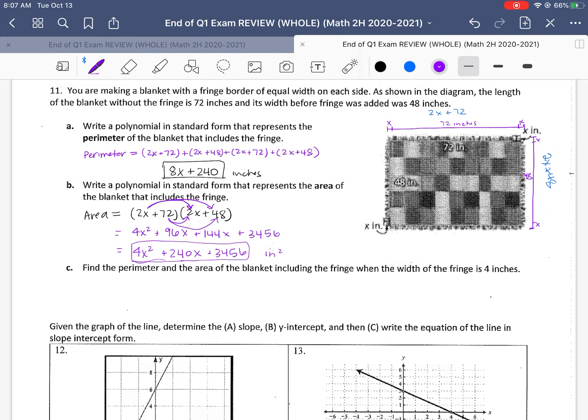Part C says find the perimeter in the area of the blanket when the fringe is 4. So we are going to look at, let's say, the perimeter. And if the fringe is 4, that means x is equal to 4. So I just take my perimeter polynomial from part A. And I do 8 times 4. Put 4 in for x. So we've got 32 plus 240. So 272 inches on that one. Area. Again, we take our area polynomial. And we just put in 4 everywhere there's an x. And then we multiply that out and we simplify and we should get about 4,480 square inches.